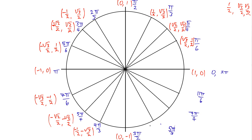The same thing applies in the fourth quadrant. At 5pi over 3, the x value is 1/2 and the y value is square root of 3 over 2. But in the fourth quadrant we've moved right so x is positive, but down so y is negative. At 7pi over 4, it's a pi over 4 point, so it's (square root of 2 over 2, square root of 2 over 2), but the y value is negative. And finally for 11pi over 6, the x value is square root of 3 over 2 and the y value is negative 1/2.